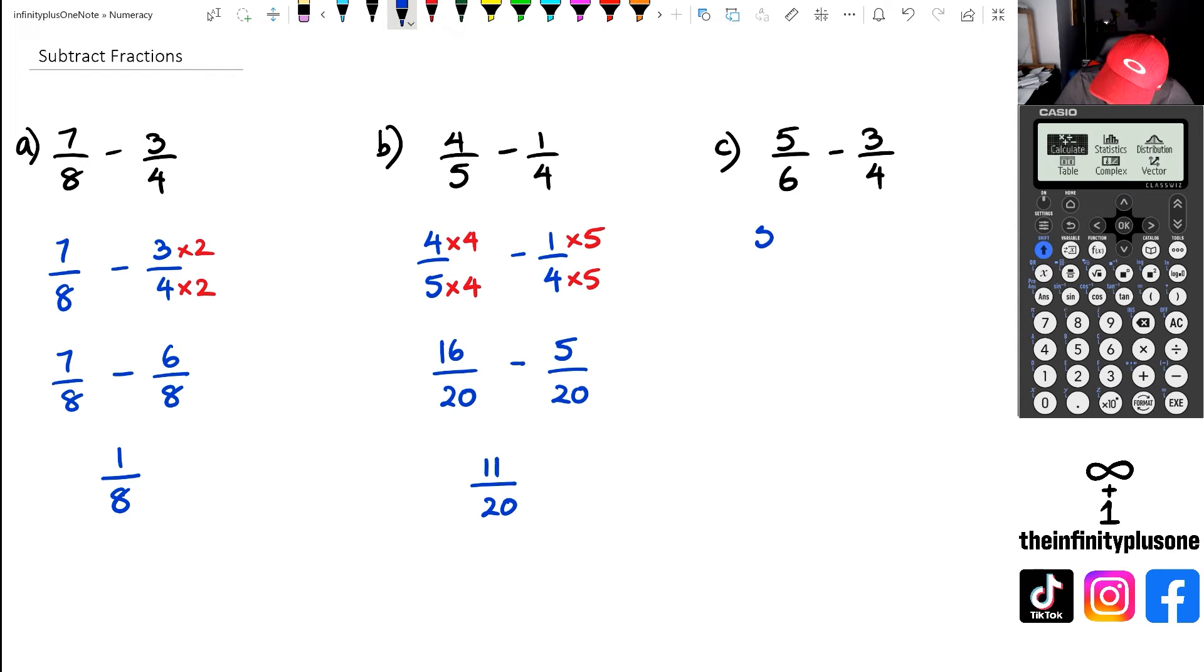So the 6, to change the 6 to 12, we're going to multiply by 2. And same with the 5, we're going to multiply it by 2. As for the 3 over 4, we are going to multiply 4 times 3 to get to 12, and 3 times 3 to get the numerator.